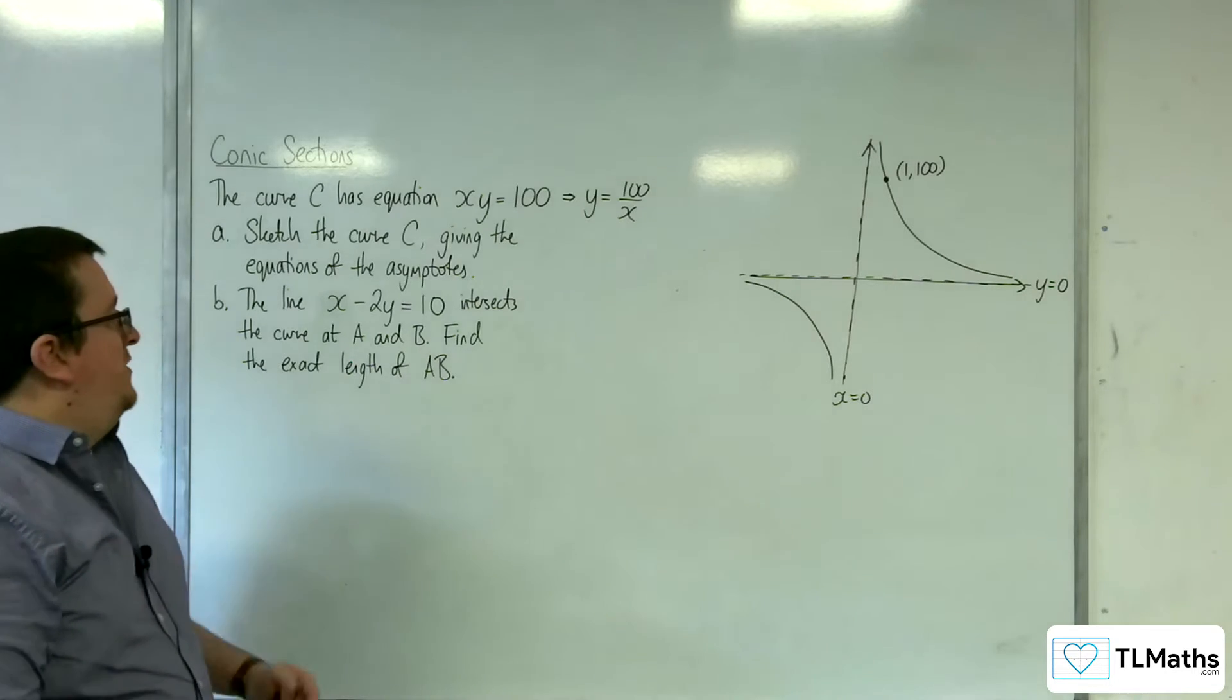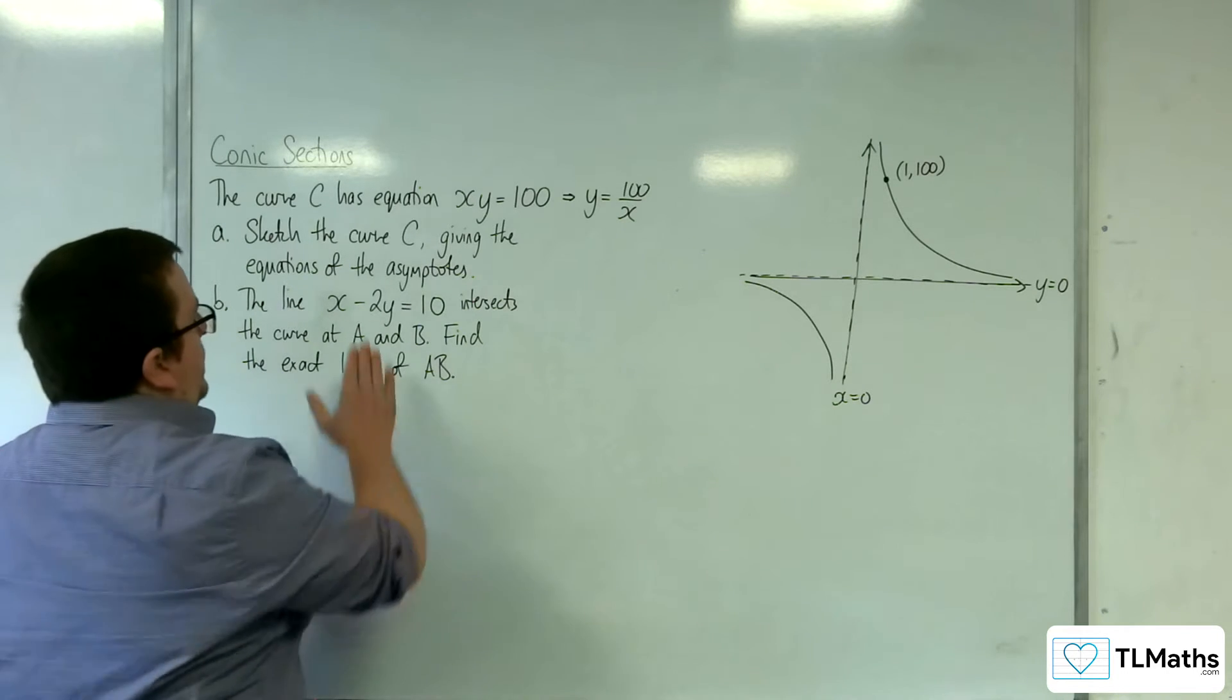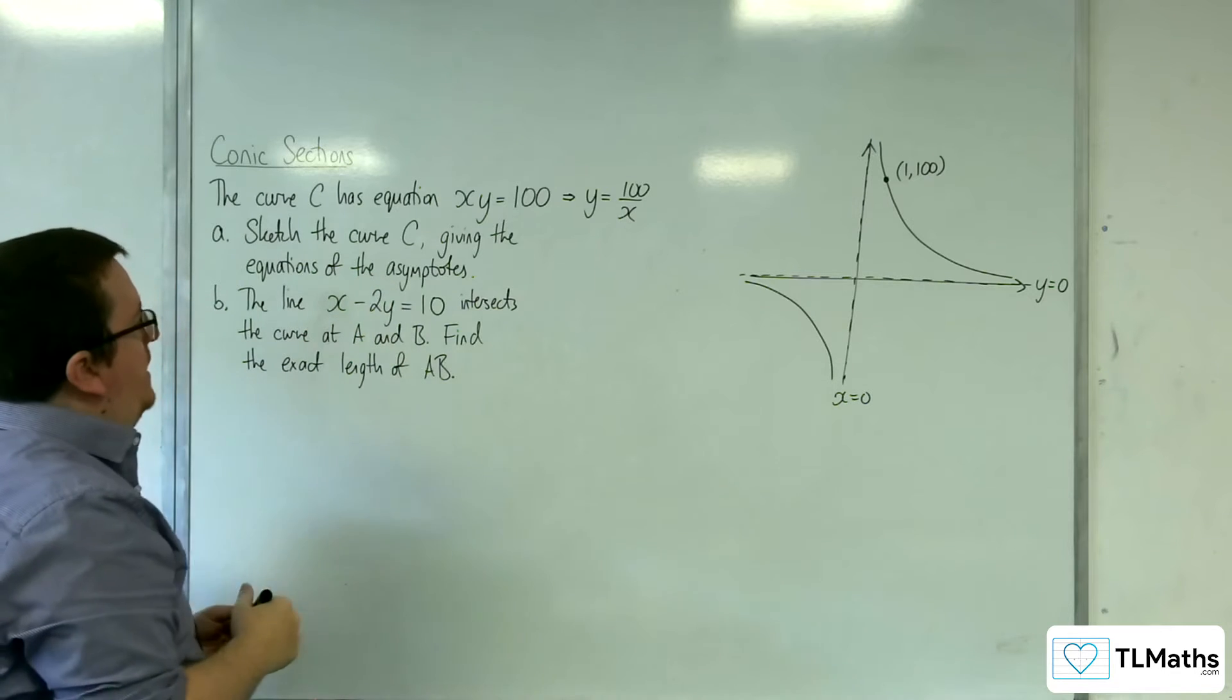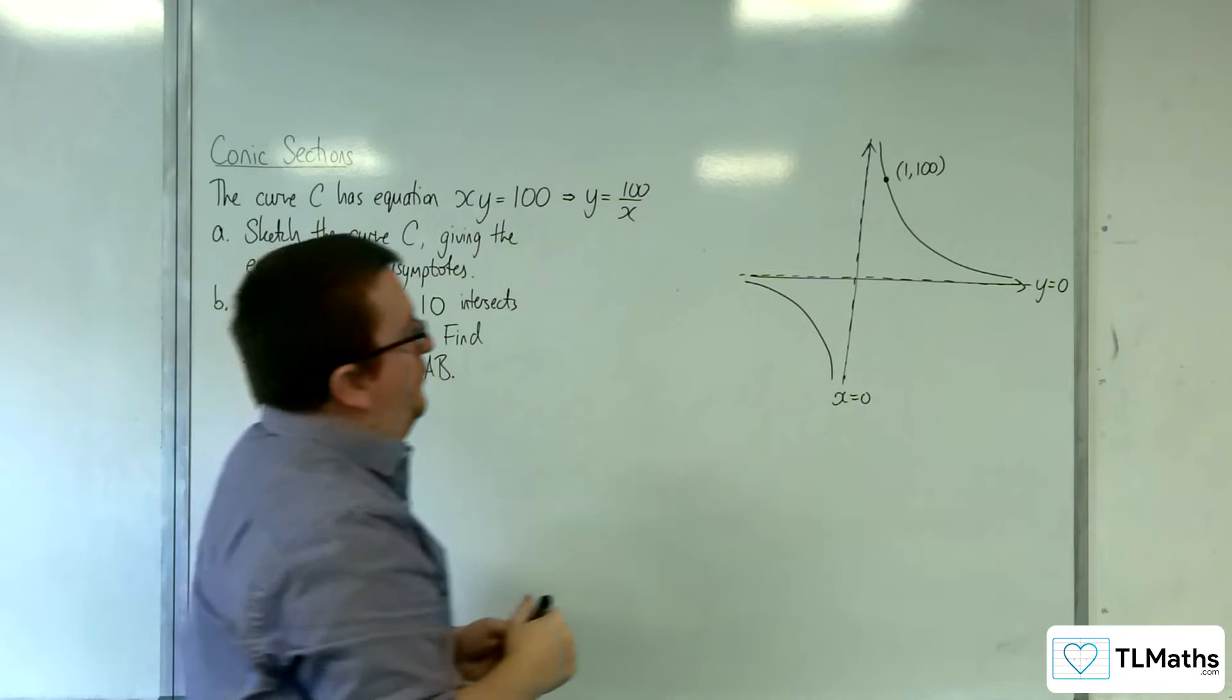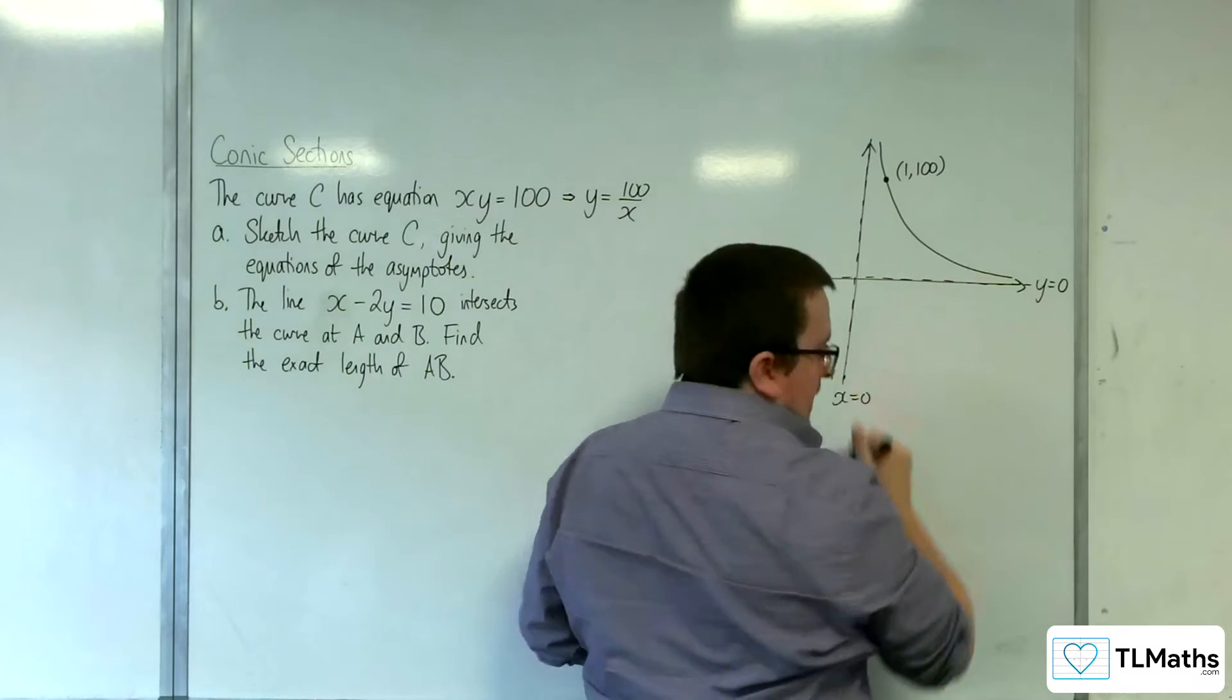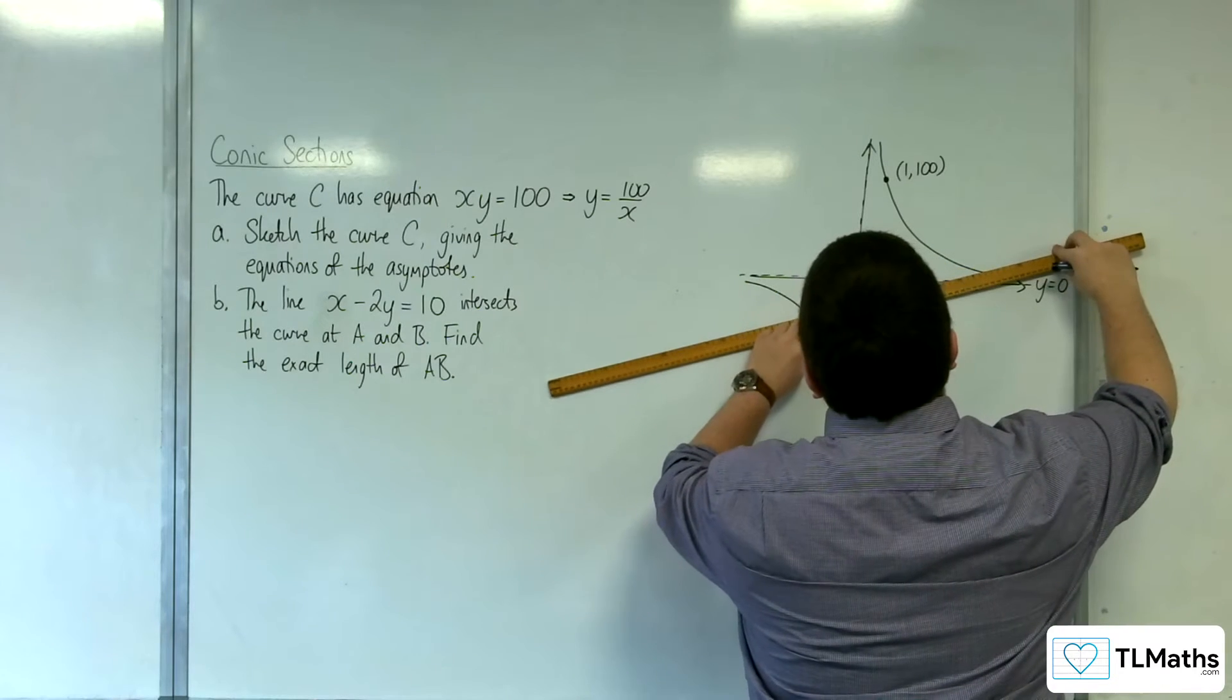So x take away 2y equals 10. When y equals 0, x is 10, and when x is 0, y would be minus 5. So it would be a line that looks something like this.